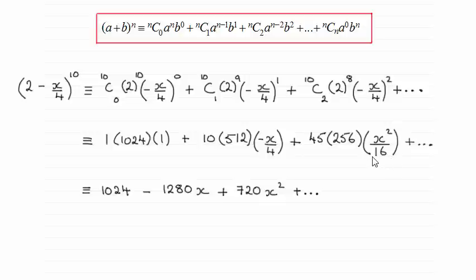So do use your calculator if you're unsure of any of these values. Anything nc0 is always 1 though and nc1 is always the value of n, 10 in this case as you can see.